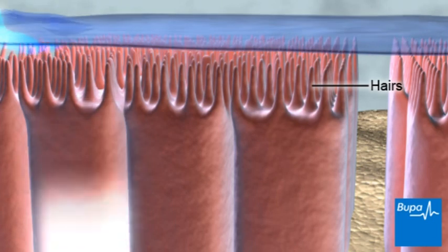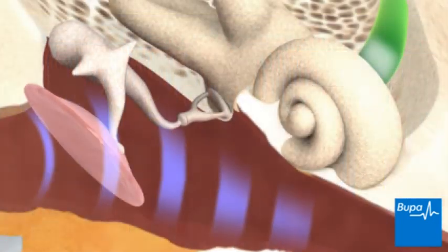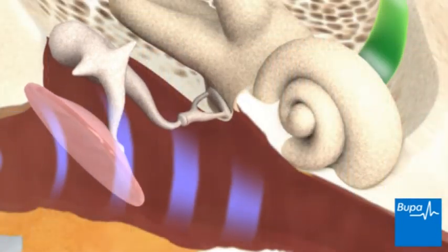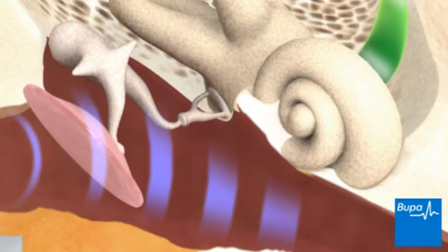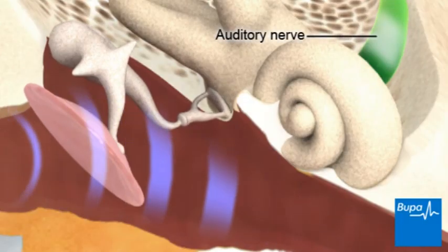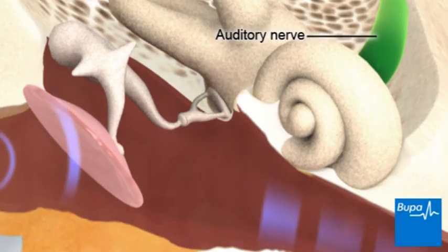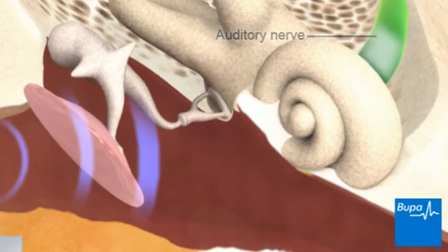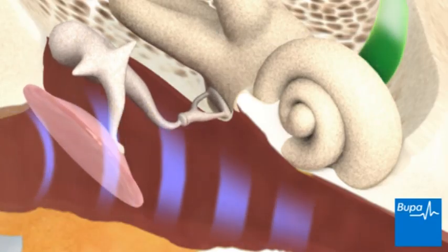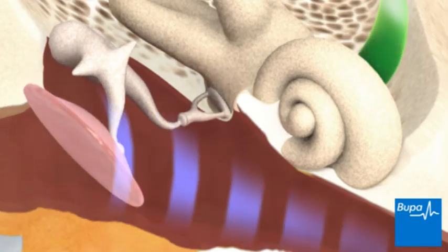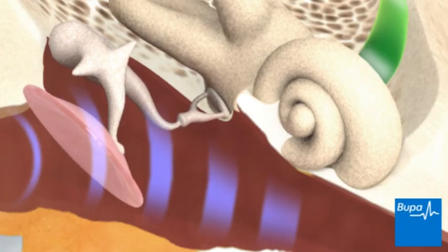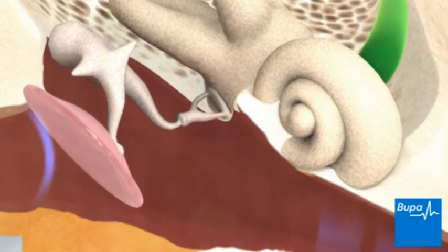Here we show the hairs moving. When the hairs in the cochlea move, they cause an electrical signal to travel through the auditory nerve and to your brain. This electrical signal varies depending on the pitch of the sound and how loud it is. Your brain makes sense of this signal and so you hear the sound.